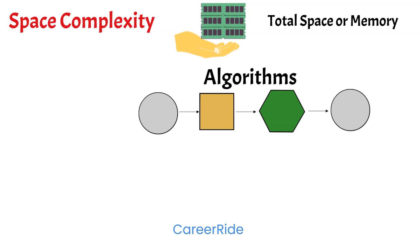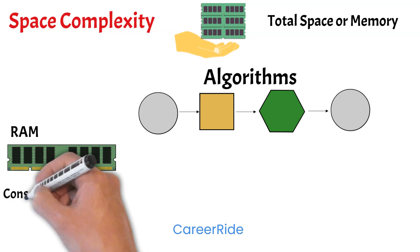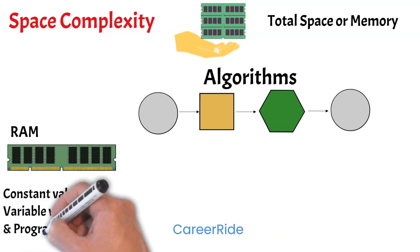Whenever we execute a problem, space or memory is allocated in the main memory for many purposes such as to store constant values, variable values, and to store program instructions such as function calls, return statements, etc.